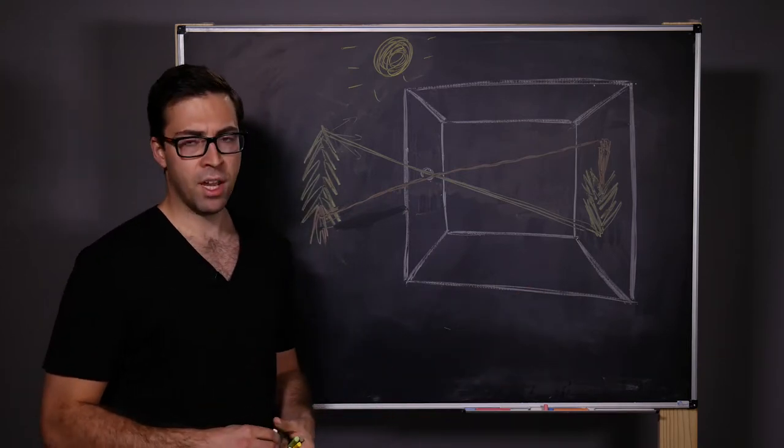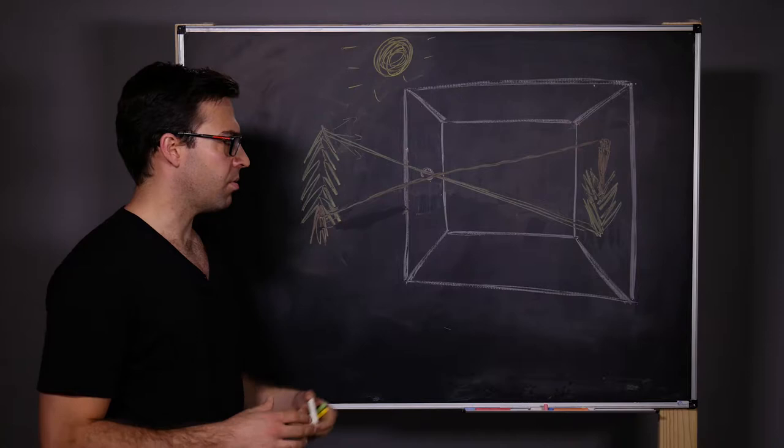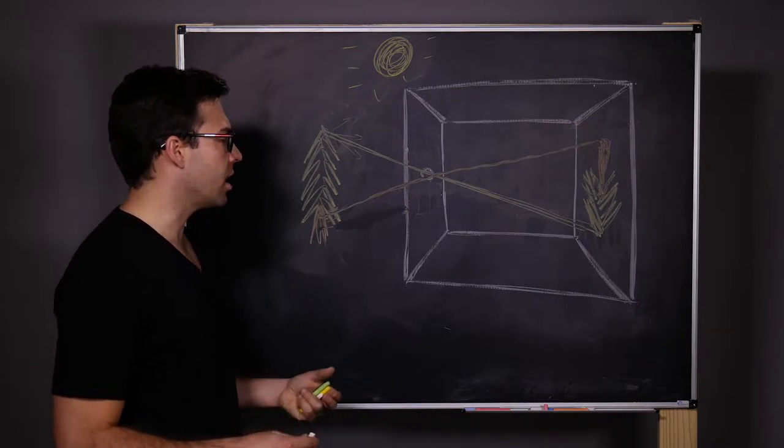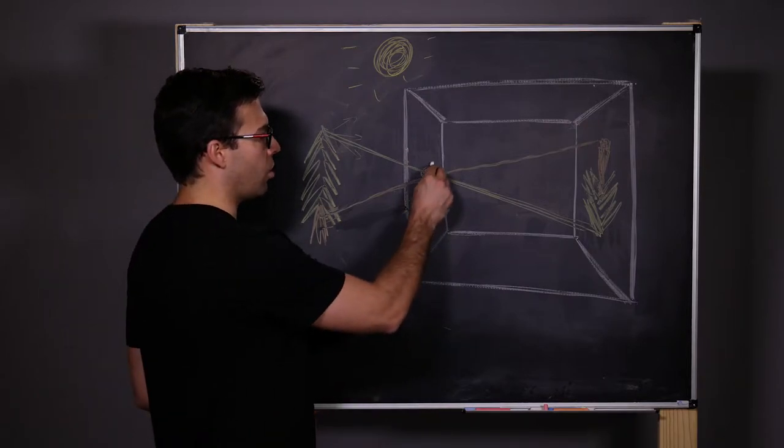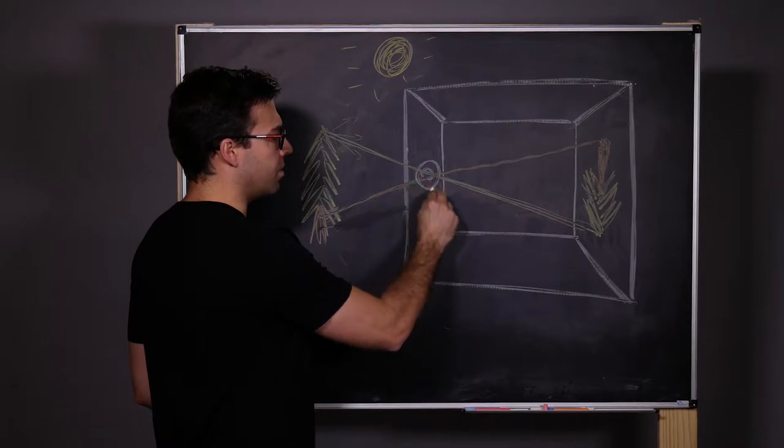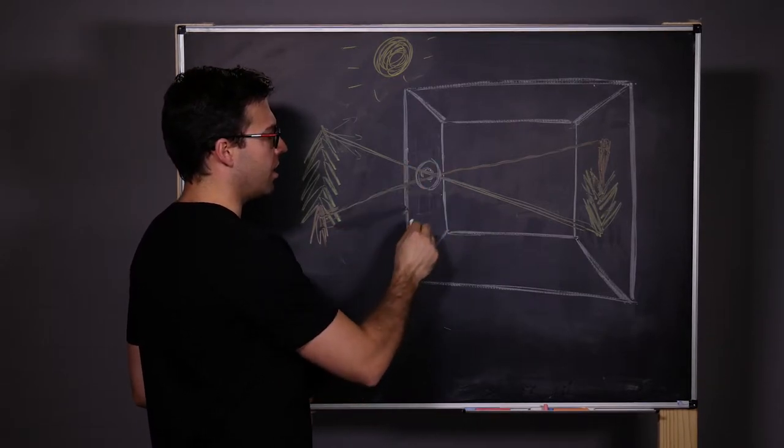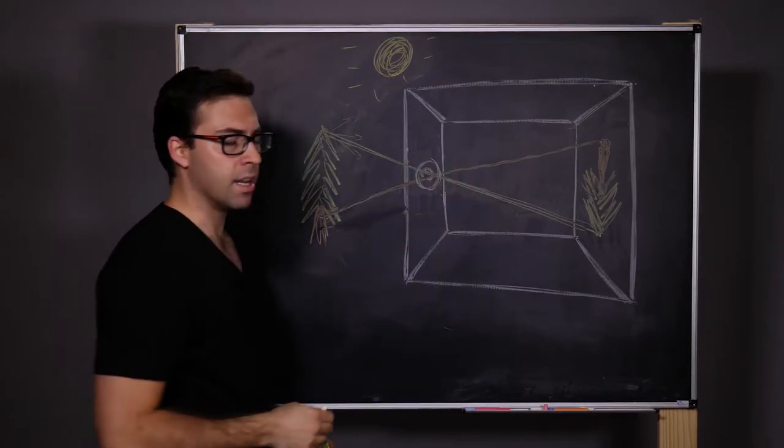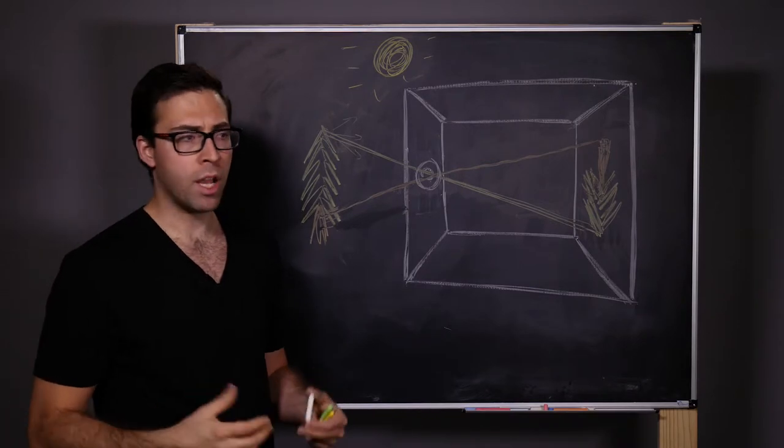Now, there were optics at the time, and we know this because of microscope developers and the like. So you could actually replace this hole with a lens, a converging lens that would focus the light and allow a larger opening, allowing more light in.